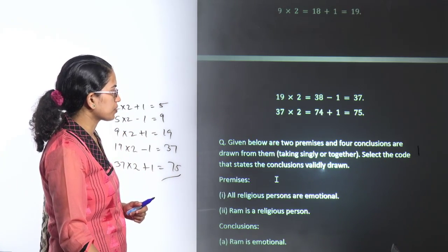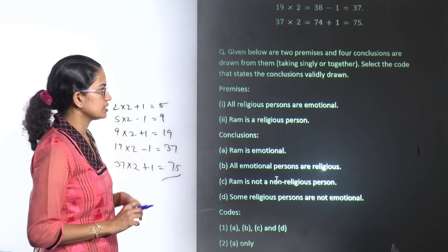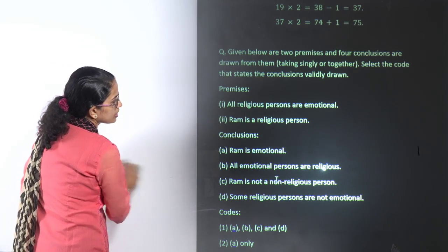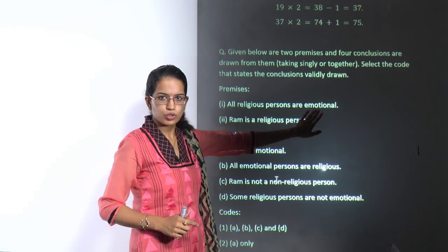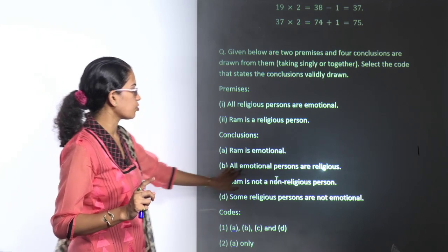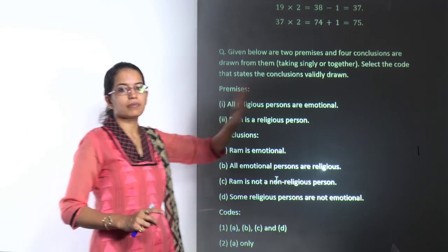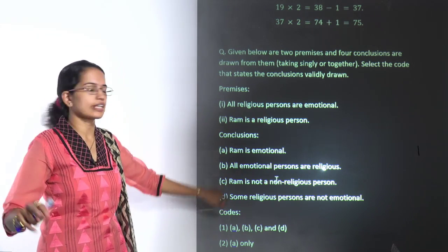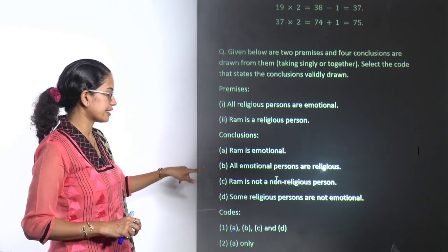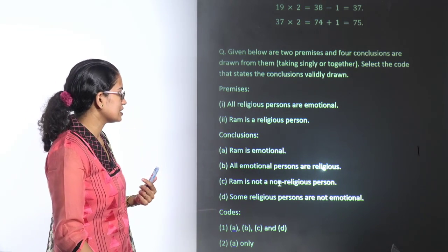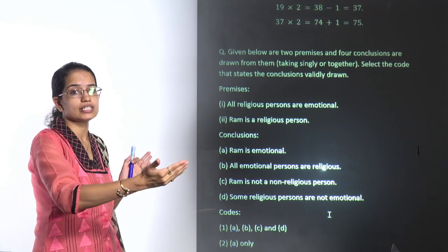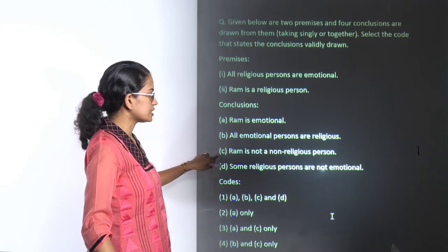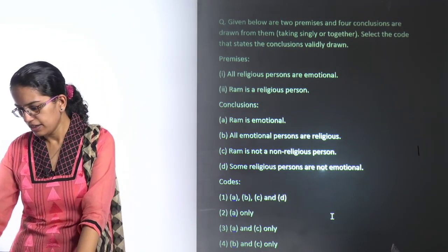The next question: all religious persons are emotional; Ram is a religious person — therefore Ram is emotional (statement A is correct). The next statement says all emotional persons are religious — I cannot conclude that, so B is incorrect. Some religious persons are not emotional — that's incorrect since all are emotional, so D is incorrect. Statement C says Ram is not a non-religious person, which means Ram is a religious person — that's exactly what can be deduced. So statements A and C are the correct answers.